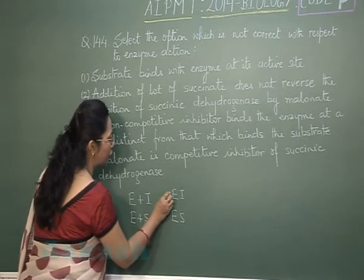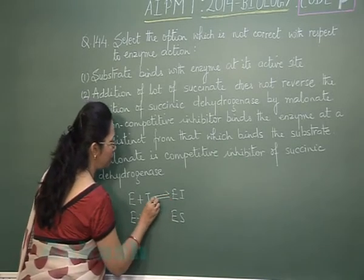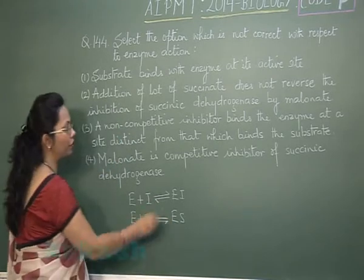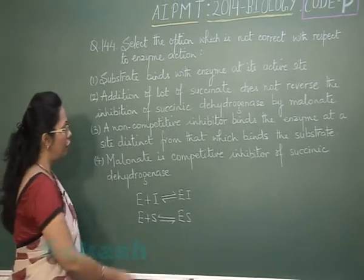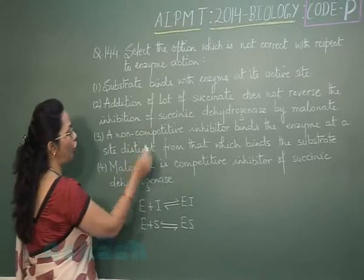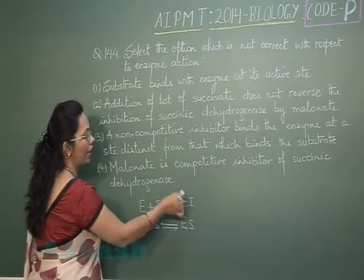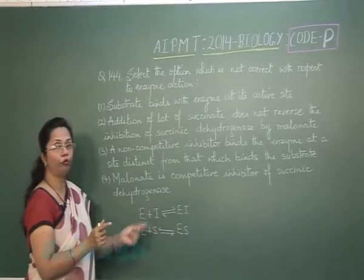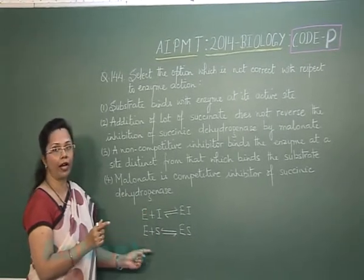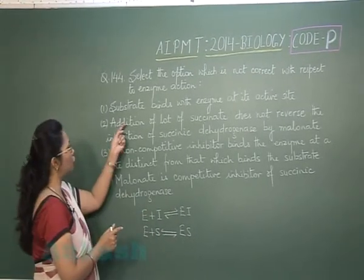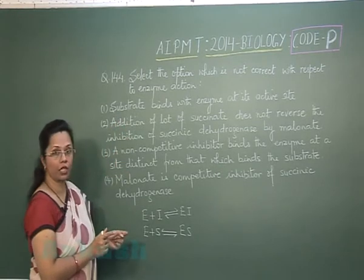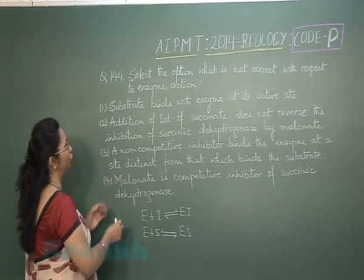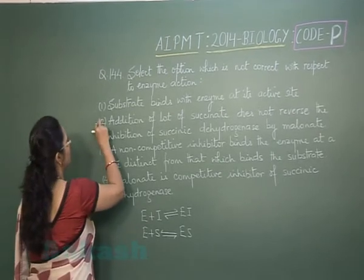With competitive inhibition, this reaction is reversible. So if we add a lot of succinate, the enzyme-inhibitor complex will dissociate and the enzyme would be free to bind with succinate. Therefore, the claim that addition of a lot of succinate does not reverse the inhibition is not true.